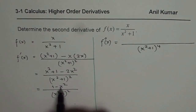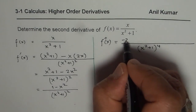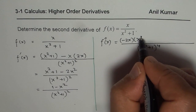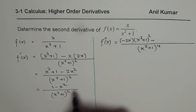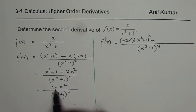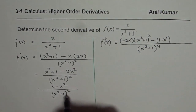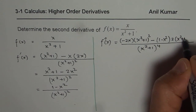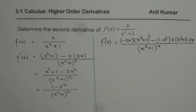The derivative of the numerator, which is minus 2x, times the denominator which is (x squared plus 1) squared, minus the product of 1 minus x squared times the derivative of the denominator, which is 2 times (x squared plus 1) times 2x. That is the expression for the second derivative.